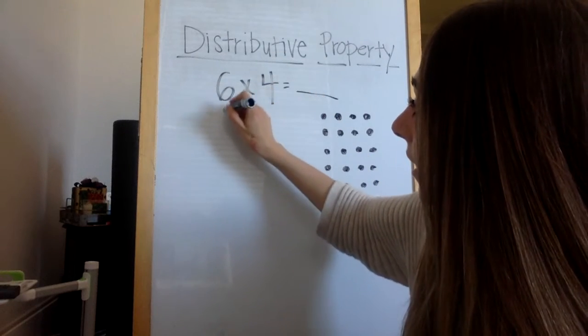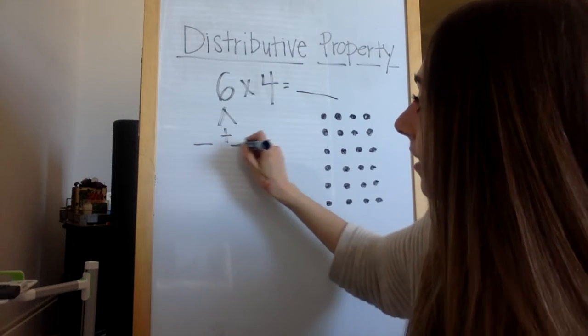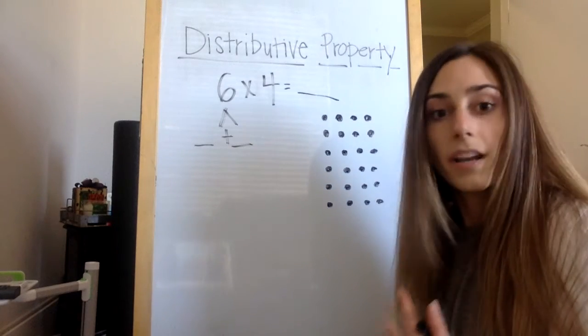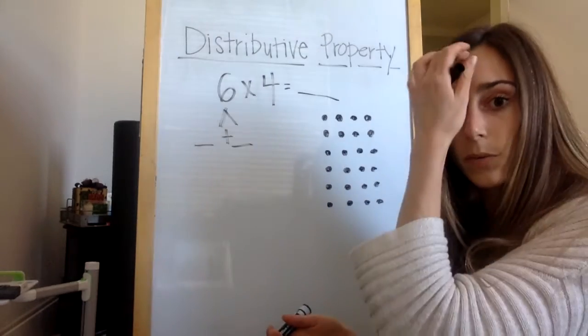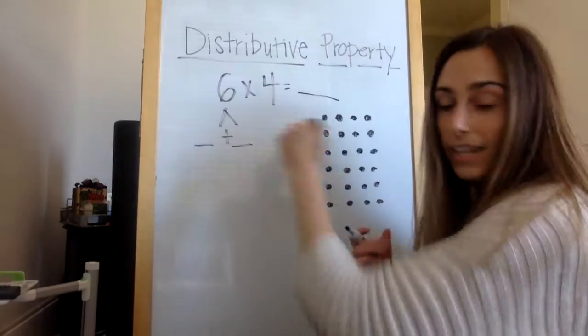I'm going to take the number six, and I'm going to break it up into two addends that I can add together to get to six. It doesn't matter what numbers you choose. There's no right or wrong answer. There's multiple ways that we can get to six by adding two addends together, as long as those two addends equal six.